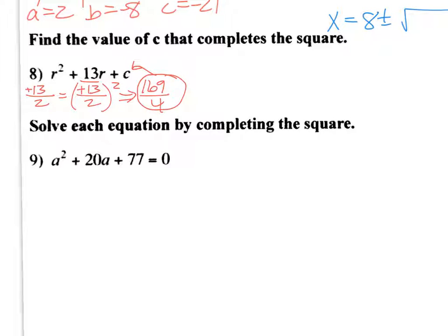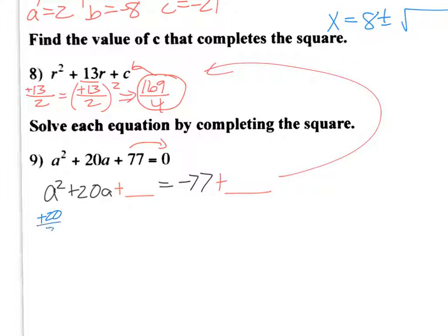Now, how do you solve by completing the square? Very similar. Remember, in this case, we don't want it equal to 0. So we move our number over. So in that case, that's negative 77. And then we need plus something, plus something, what we just did, right back up here. So I have to figure that out. So how do I do that? I do the same steps that I just did right up here. So I'm going to take positive 20, divide by 2. That gives me positive 10. Square that, and that's 100. So that's what goes here, 100. But it also goes right here, 100.